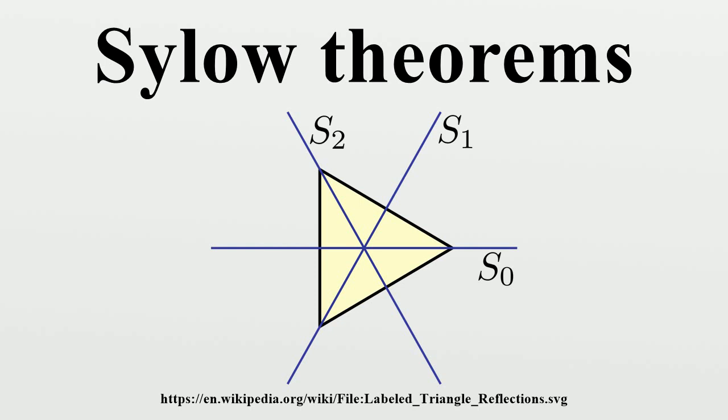On the other hand, for the order of G equals 60 equals 2^2 times 3 times 5, then n_3 equals 10 and n_5 equals 6 is perfectly possible. And in fact, the smallest simple non-cyclic group is A_5, the alternating group over 5 elements. It has order 60, and has 24 cyclic permutations of order 5, and 20 of order 3.